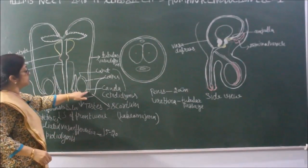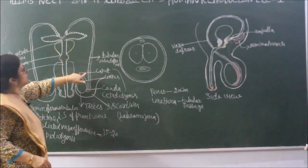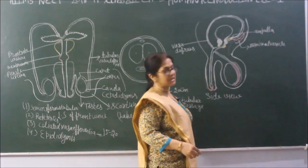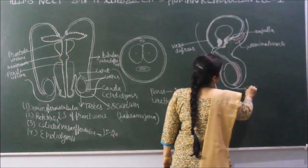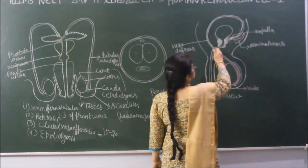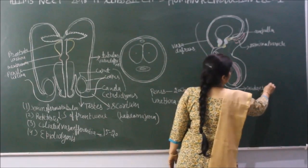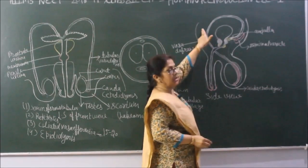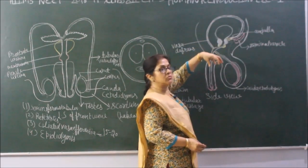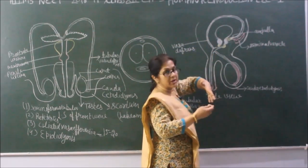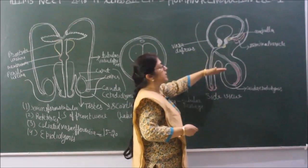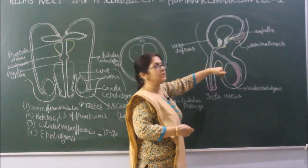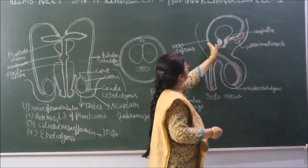Then comes the vas deferens, which arises from the cauda epididymis. It is again a highly coiled tubular structure — if uncoiled, it can be up to 6 meters in length. It moves upward toward the abdomen, passing through the inguinal canal. The testes move toward the scrotum by means of the spermatic cord through this inguinal canal.